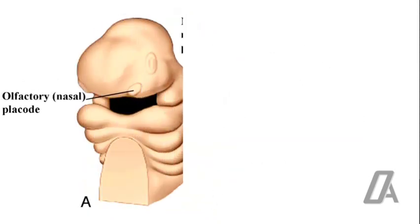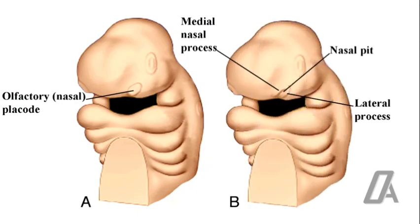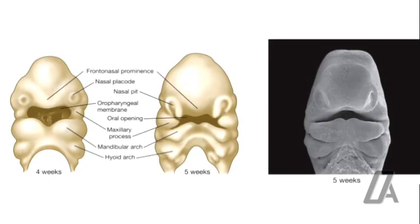In the meanwhile, the frontonasal process of the forebrain, just above the stomodeum, develops bilateral thickenings called the nasal placode. In the middle, there is invagination of the placode to form nasal pits. On both sides of the nasal pits there are elevations, which are the medial and lateral nasal processes. By about the fourth week of intrauterine life, a facial process arises from the first arch, corresponding to the mandibular processes. Later, the mandibular processes give two more swellings which grow intermedially — these are the maxillary processes.